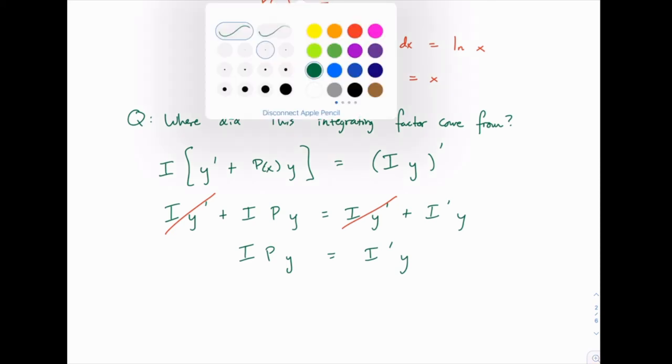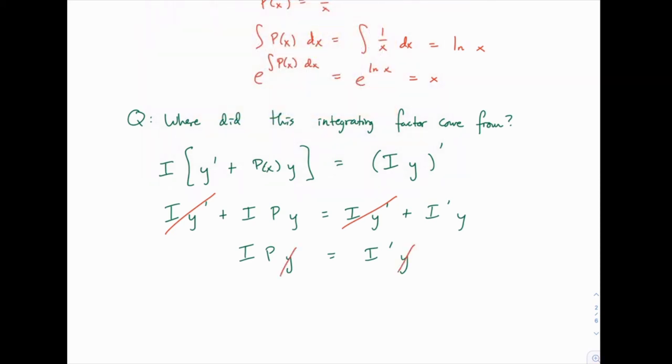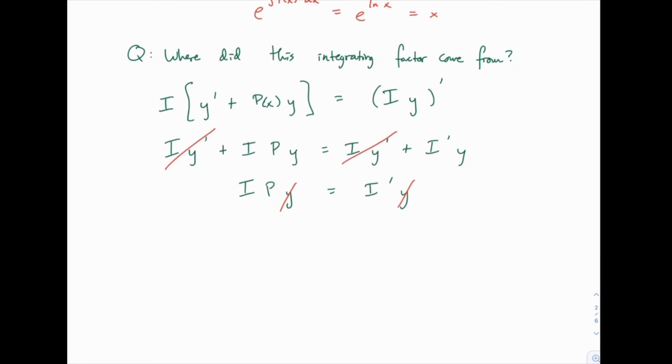Again we can cancel a y from both sides, assuming y isn't 0, which we can get away with because if y were 0 we wouldn't need to do the problem. That wouldn't be a very interesting differential equation. So then we have just i times p equals i prime. And i and p are both functions of x.